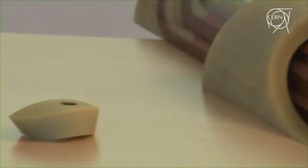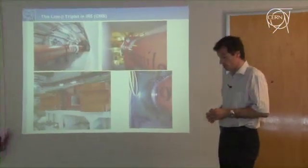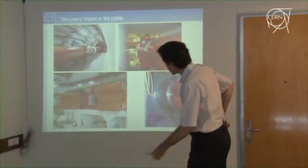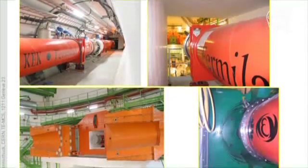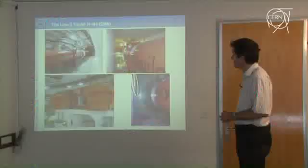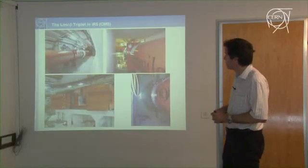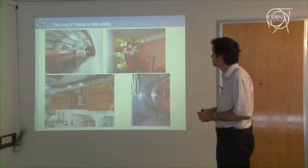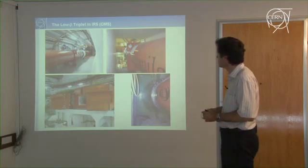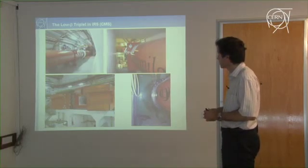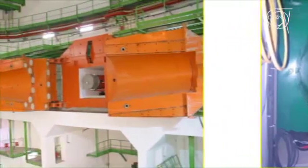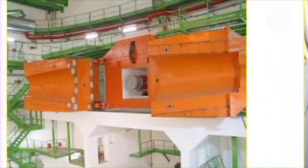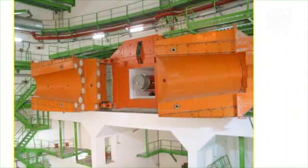Today what we are talking about is a technical specification for the production of these pieces for a new project which is an upgrade of the low beta triplets for the LHC. Here we see the magnets in the cryostat installed near CMS, near point 5 where you see the experimental cavern in the background.